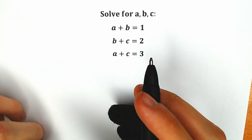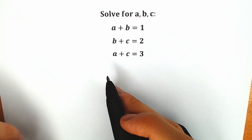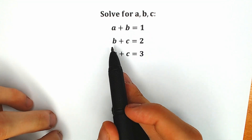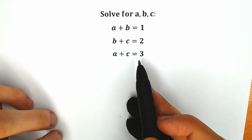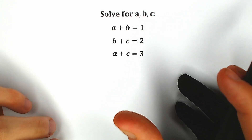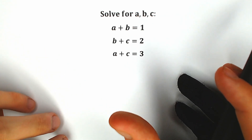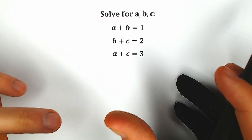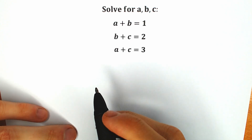Hello everyone, happy to see you here. Welcome back to my channel, Higher Mathematics. Today we have a very interesting system of equations: a plus b equal to 1, b plus c equal to 2, and a plus c equal to 3, and we need to solve this for a, b, and c. If you have your solution, you can also solve this in the comments below, and then we will check your answers. In this video I'm going to show you four best methods to solve this system of equations.